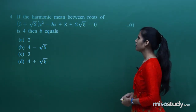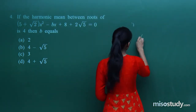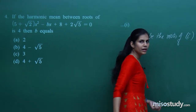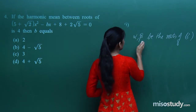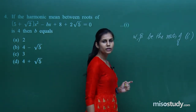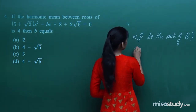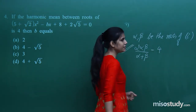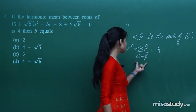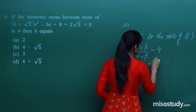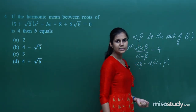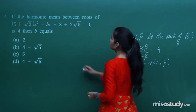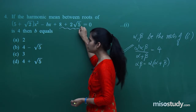Next question: the harmonic mean of the roots of a quadratic equation is 4. Let alpha and beta be the roots. The harmonic mean formula gives 2αβ/(α+β) = 4. This means αβ = 2(α+β). The product of roots αβ equals the constant term upon coefficient of x², which is (8 + 2√5)/(5 + √2).